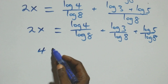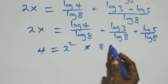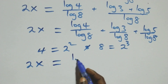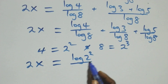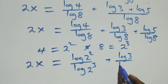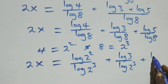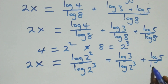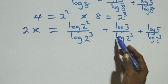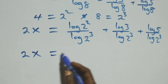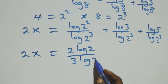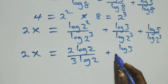We can write 4 as 2 times 2, which is 2 squared, and also 8 as 2 times 2 times 2, which is 2 cubed. So we have 2x equals log(2 squared) over log(2 cubed) plus log 3 over log(2 cubed) plus log 5 over log(2 cubed). Applying the power rule of logarithm, the exponents come out: 2x equals 2 log 2 over 3 log 2 plus log 3 over 3 log 2.